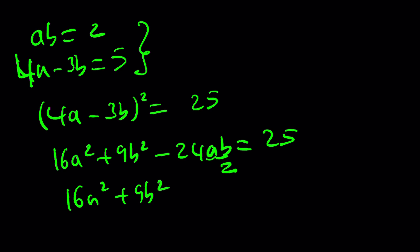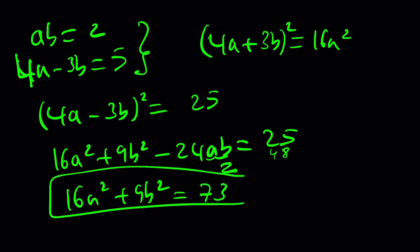I know that ab is 2, so this will be 48. 48 plus 25 is going to be 73. So this will be 73. And then I'll square this. And this is going to become the same thing with a plus sign. We already know ab is 2, so this is 48. And we also know that this is 73. Their sum is 121. 121 meaning this is plus minus 11.